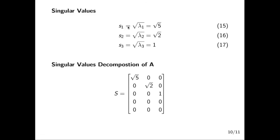From the eigenvalues we compute the singular values: S1 equals the square root of lambda-one, which is the square root of five; S2 is the square root of lambda-two, which is the square root of two; and S3 equals one as shown in equation 17. The singular values lie along the diagonals of S. We rewrite S to match the dimension of A — the three by three matrix is padded with zeros to give a five by three matrix.